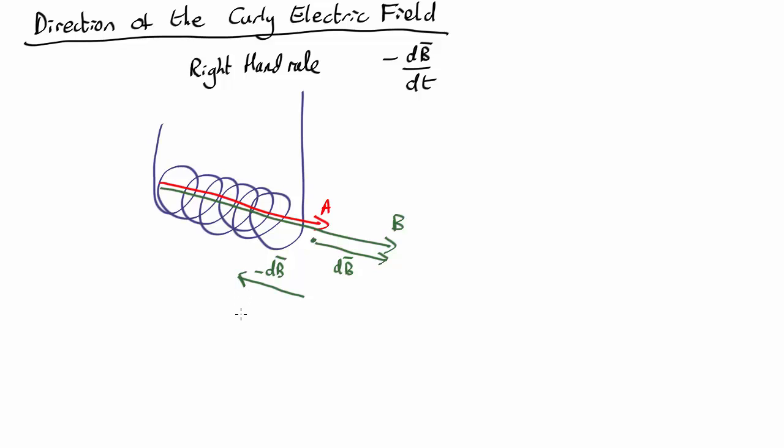And now we use the right hand rule for that. So we've got your thumb there and your fingers curling away, which tells us that the non-Coulomb curly electric field is going over the top and round that way. So it gives us a curly electric field in this direction, which is indeed what you get.